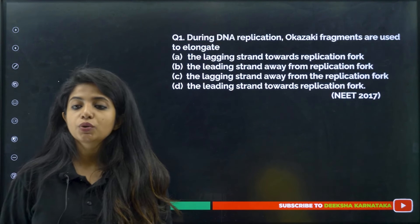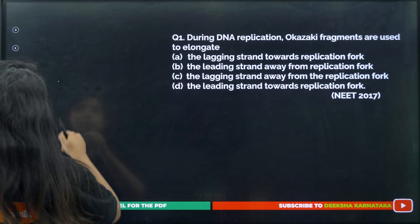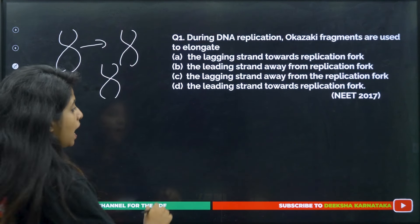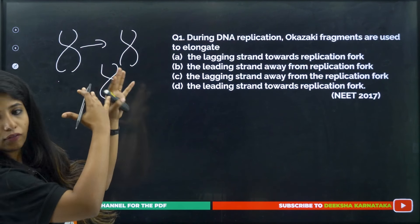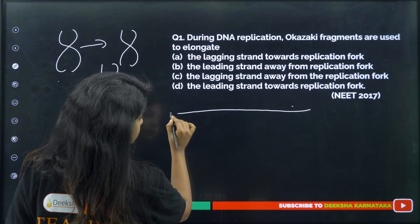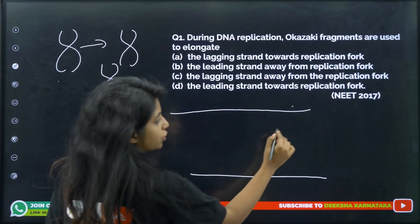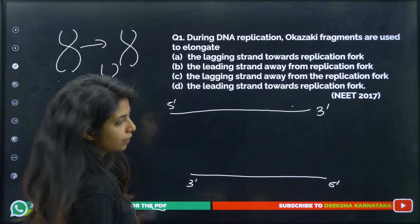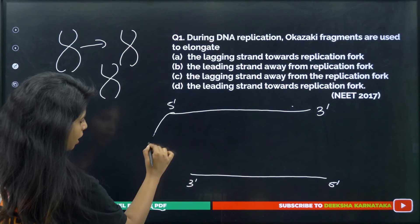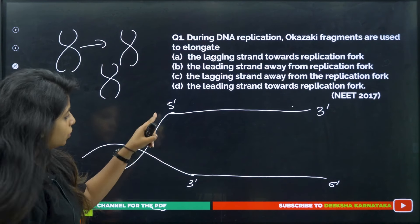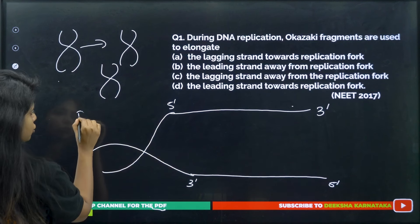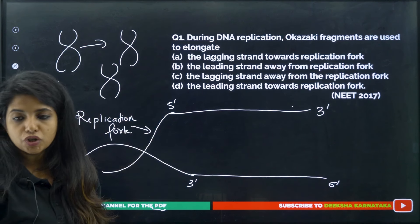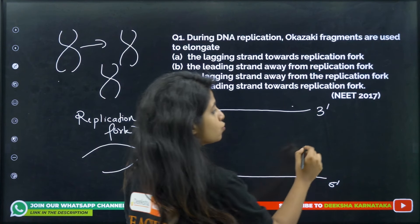The first question: during DNA replication, Okazaki fragments are used to elongate what? DNA replication means making more copies of DNA. The DNA is in a coiled state — you have to uncoil it. One strand appears in the 3' to 5' direction, the other is antiparallel in the 5' to 3' direction. The partially opened portion looks like a fork, so you call this the replication fork.